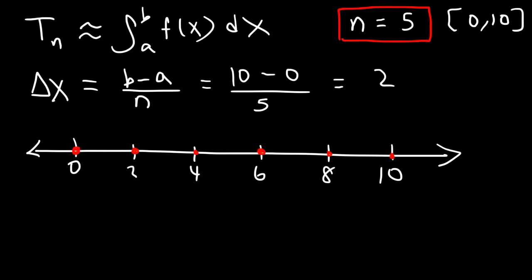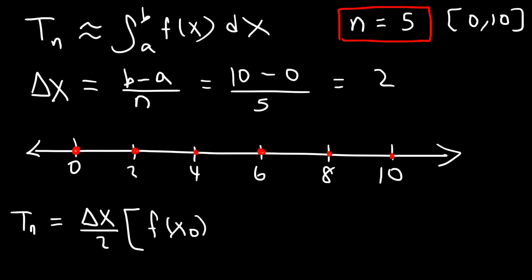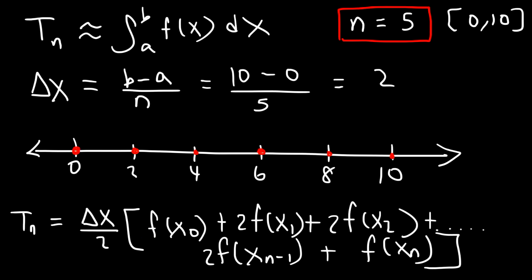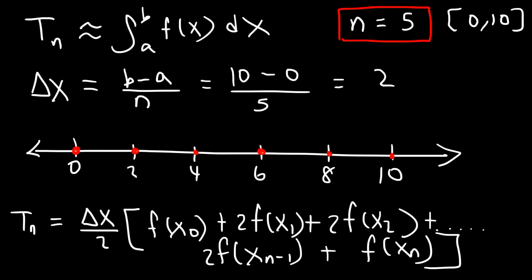What is the formula for the trapezoidal rule? The sum of the areas equals delta x divided by 2, times f(x₀) plus 2·f(x₁) plus 2·f(x₂), continuing through 2·f(x_{n-1}), and finally plus f(x_n). The key rule: the first and last y-values are not multiplied by 2; all y-values in the middle are multiplied by 2. Note that 2 times one-half gives 1.